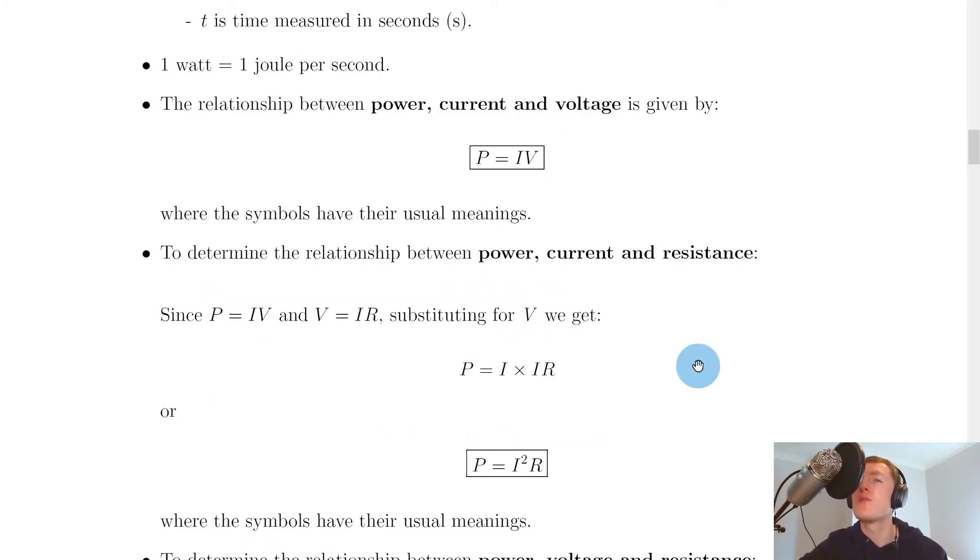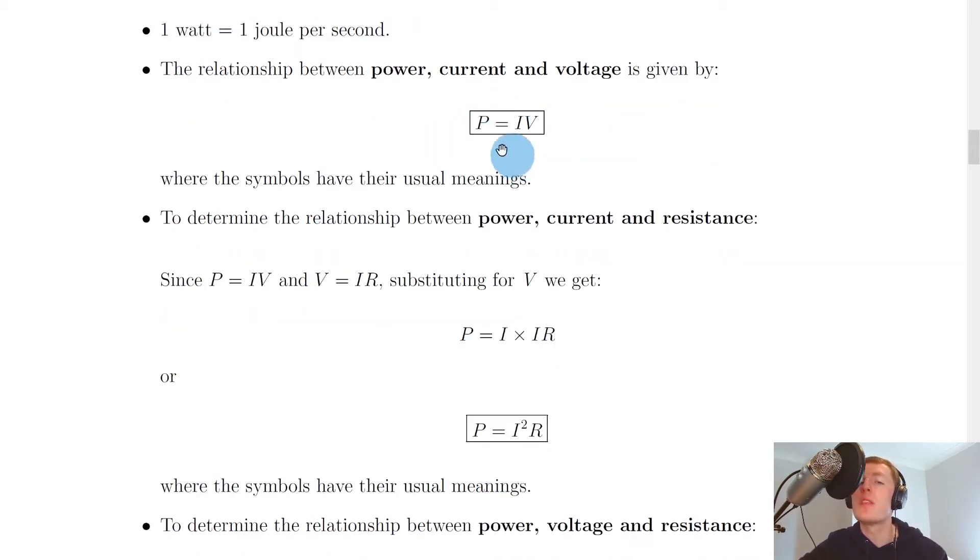You might also remember from National 5 that we have four power relationships in total, so we've got three more here. And the first one we're going to look at is the relationship between power, current, and voltage. So you might remember this one: P = IV.